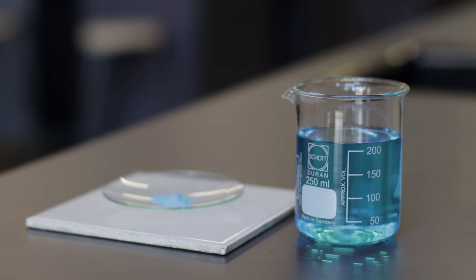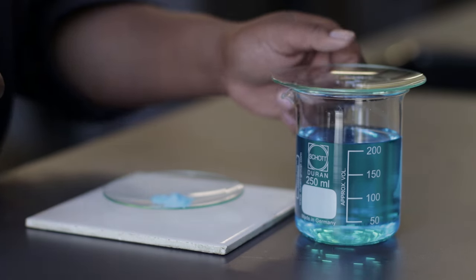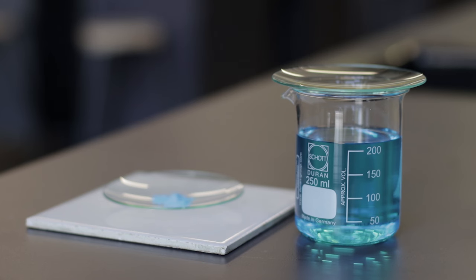A watch glass is a circular concave piece of glass. It can be used to cover the mouth of the beaker or to weigh out a solid in the absence of a weighing bottle.